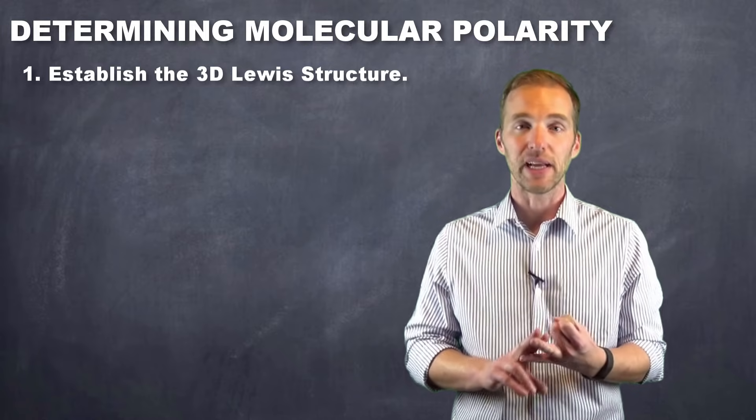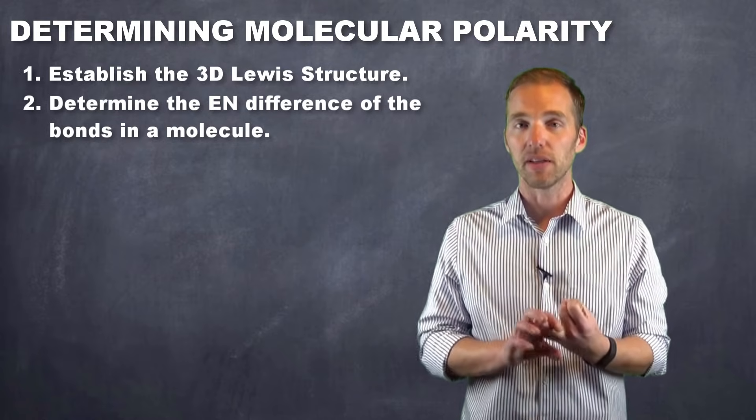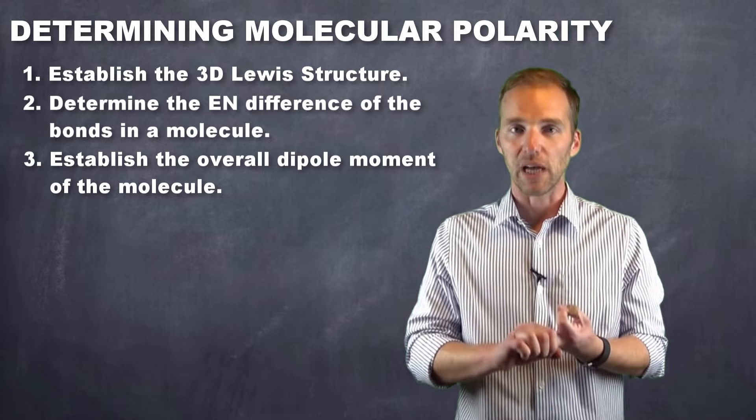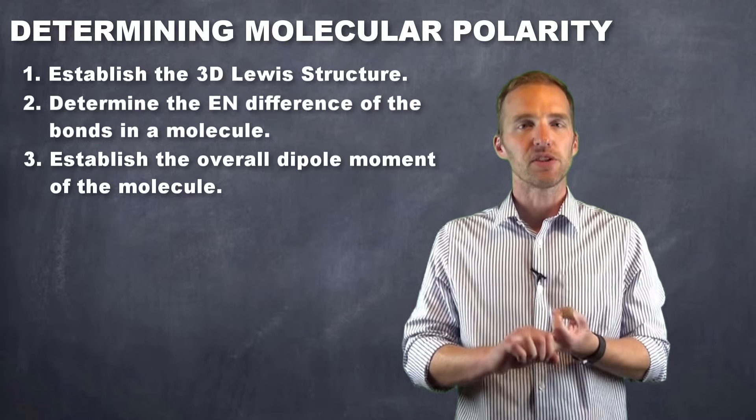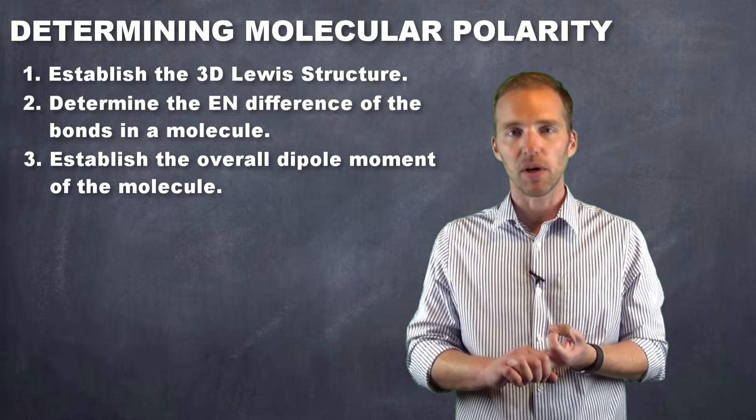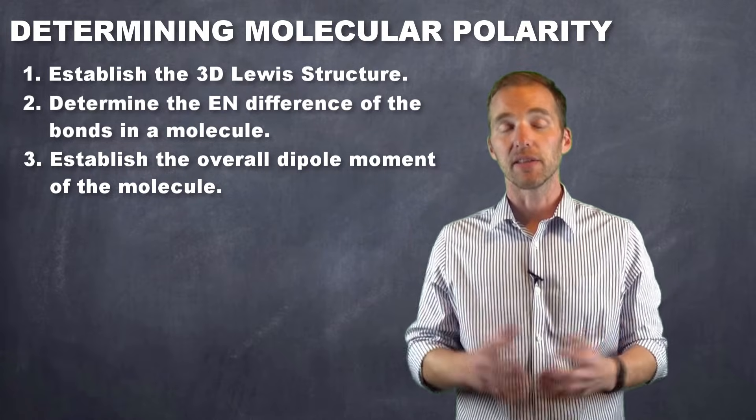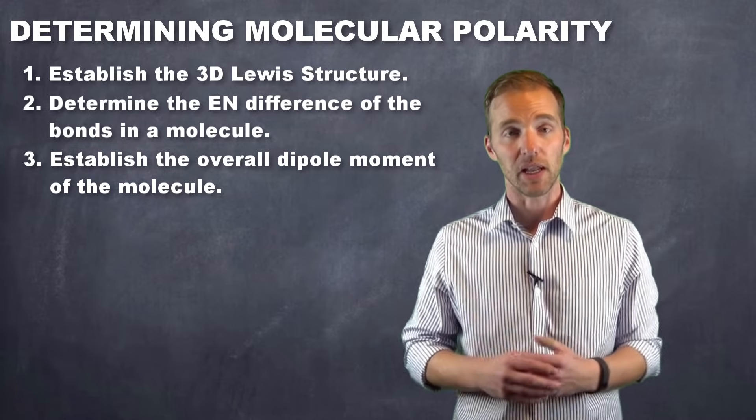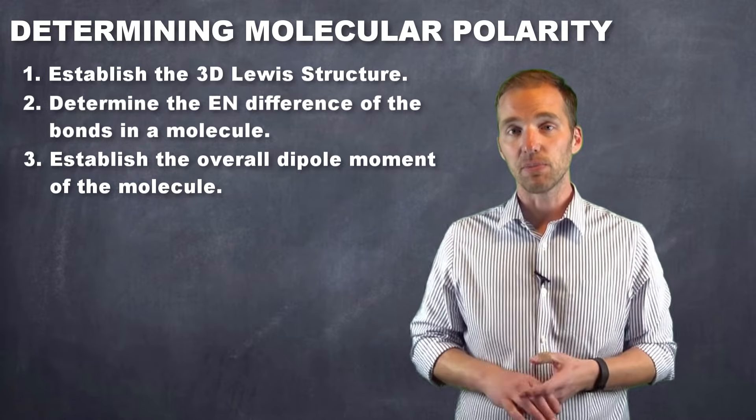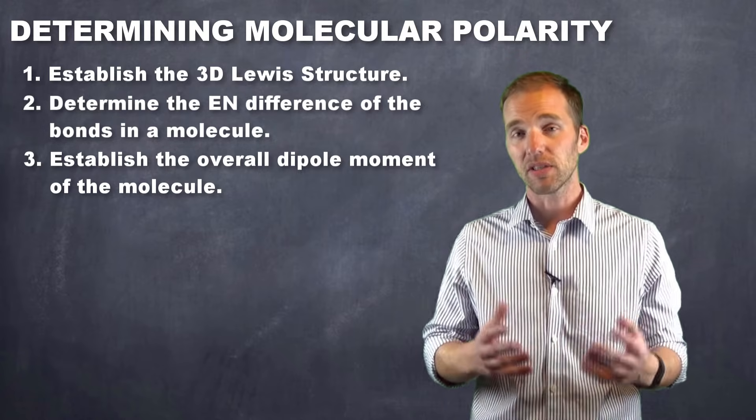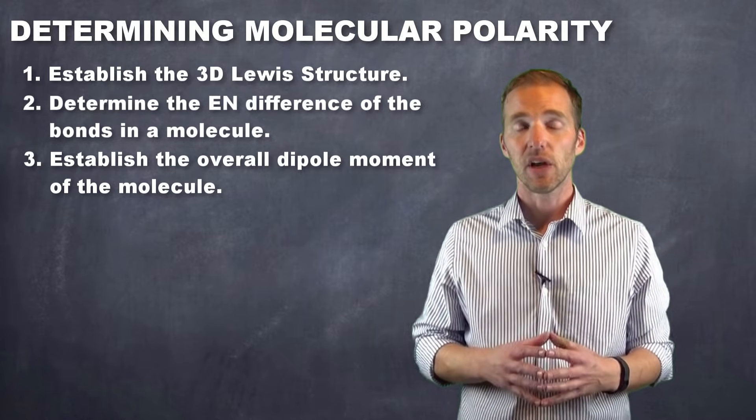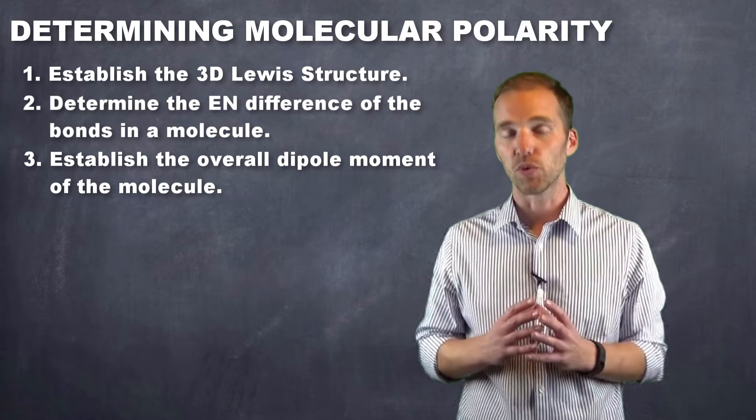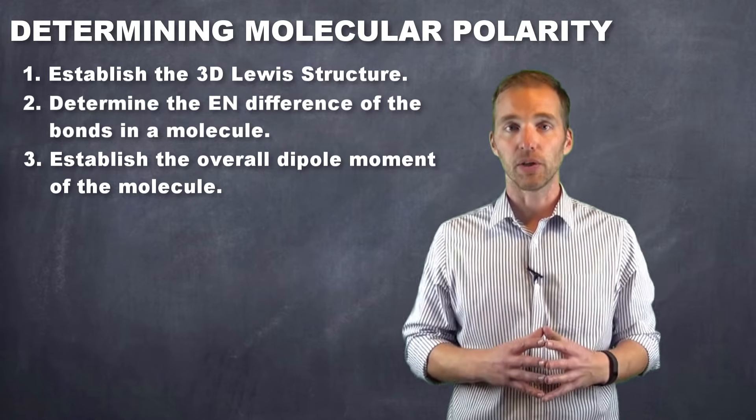Second, figure out the electronegativity difference of each of the bonds in that particular molecule. Third, try and figure out which way the overall dipole moment is moving. If it's a symmetrical molecule and all of the bonds are the same, they're all going to cancel out and you're not going to have a polar molecule. However, if you have a variant shape, as I like to call them, and we have all of these bonds being the same, or even some of them having different electronegativities, what you're likely to find is that there's an overall movement or moment towards one end of the molecule, hence making it a polar molecule.